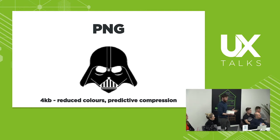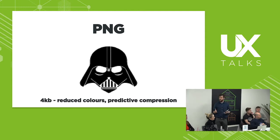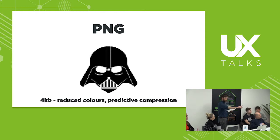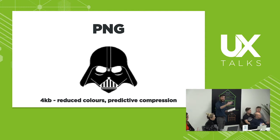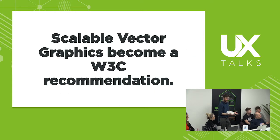PNG is a lot more modern — much more recent than the rest. It uses reduced colours and what we call predictive compression, where as the file is encoded, it scans across the image in a zig-zag fashion. When it hits a section of black, it looks at the next pixel and says, is this black? Yes. So for this span of pixels, they will all be black. It's a lot more efficient, but still not great.